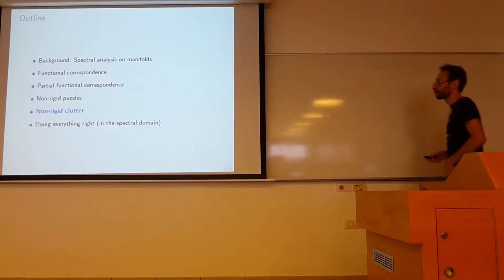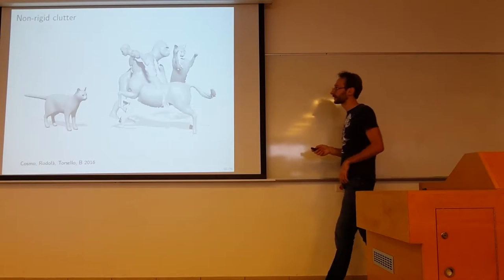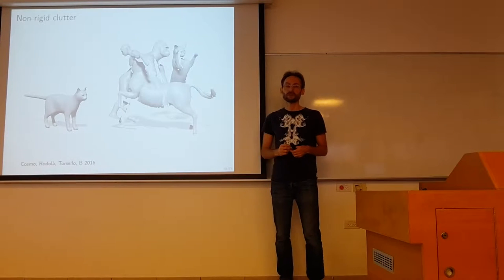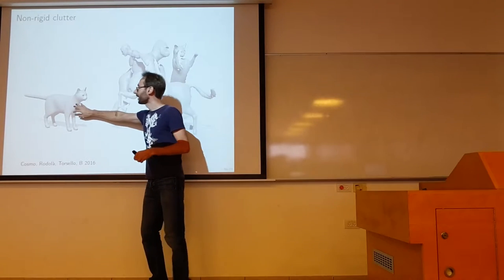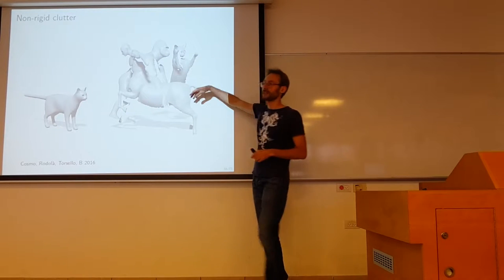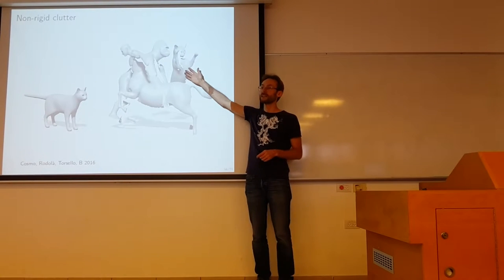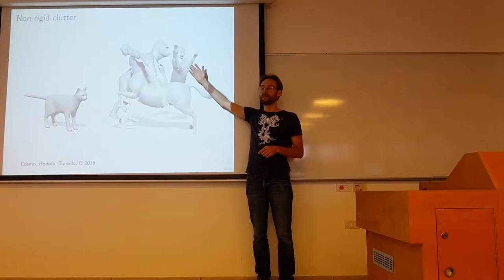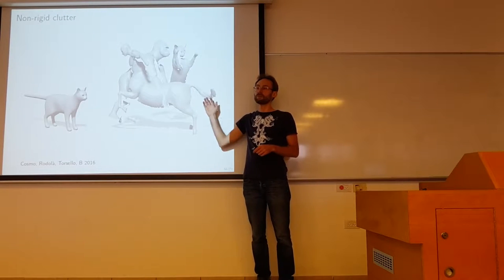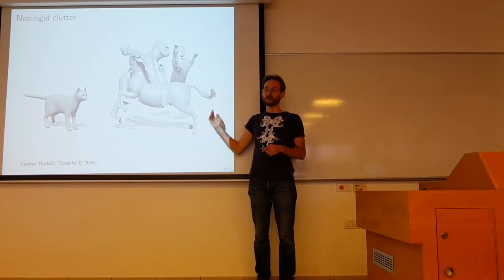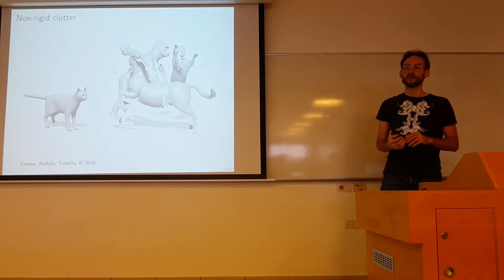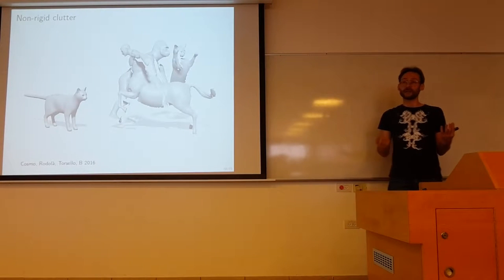So now to the even more difficult problem of non-rigid clutter. So the kind of problem we want to solve is this. We are given a shape, let's say a cat. And we have a very cluttered scene that contains a lot of objects. It also contains a cat, a deformed version of the cat. With missing parts, with occlusions, and a lot of background stuff here that has nothing to do with the cat. Basically we want to find the correspondence between these two objects.